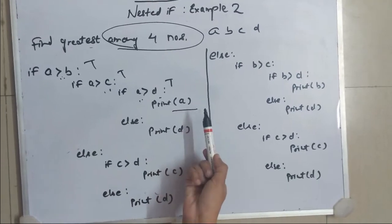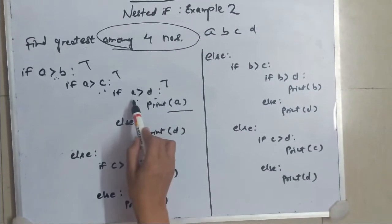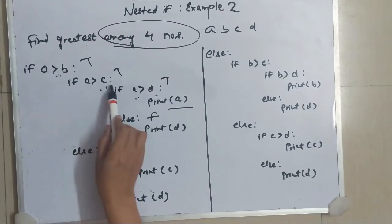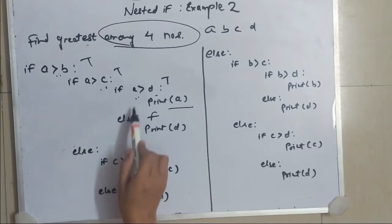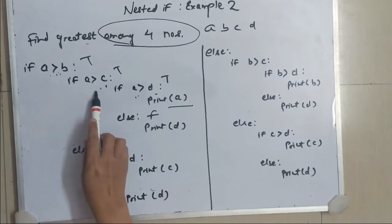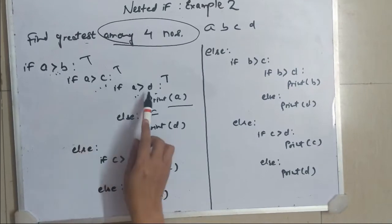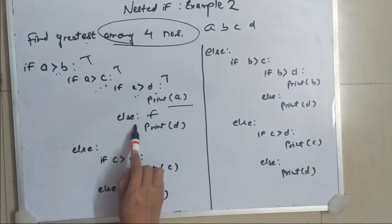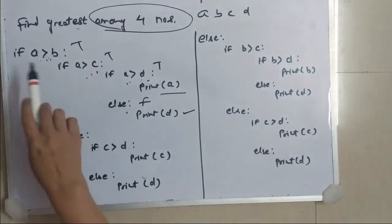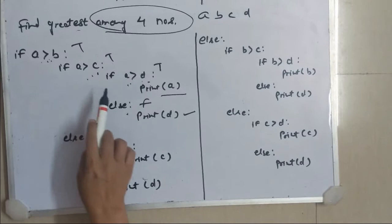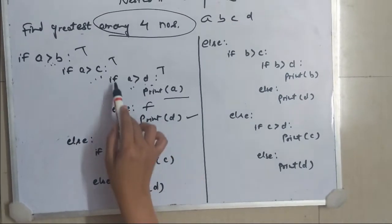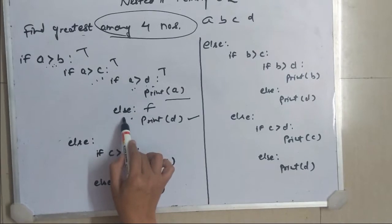That is correct. But if suppose A is greater than D is false, that means the previous statements were true and only this statement was false. A was greater than B, A was greater than C, but A was not greater than D. So that means D is greatest. Because we already compared A with B and C and it was greater, but it was not greater than D. So this is the if-else which we have completed.